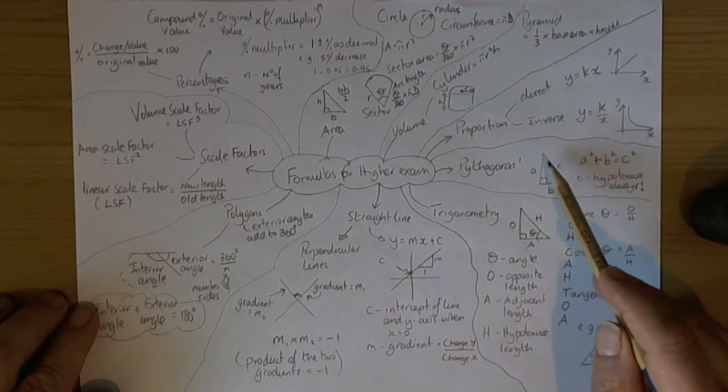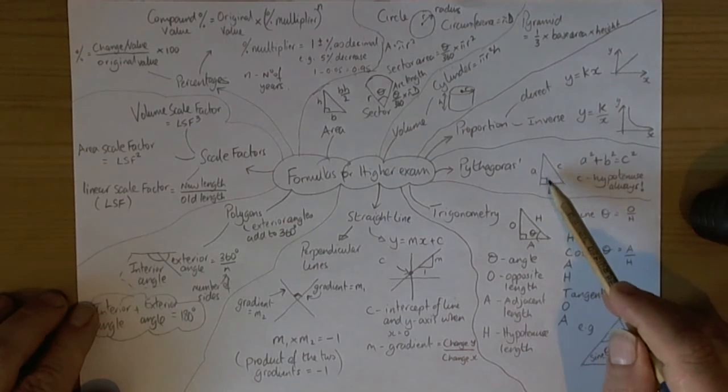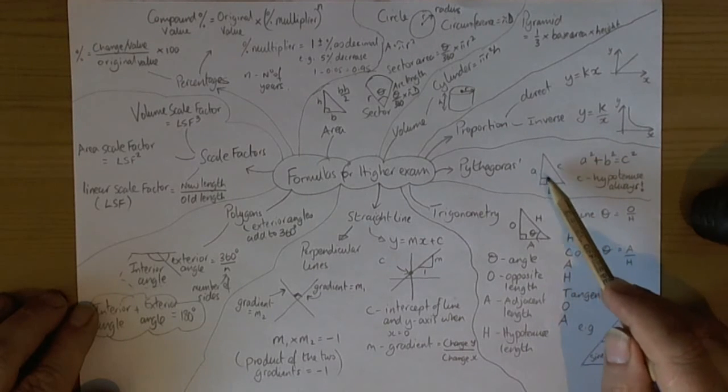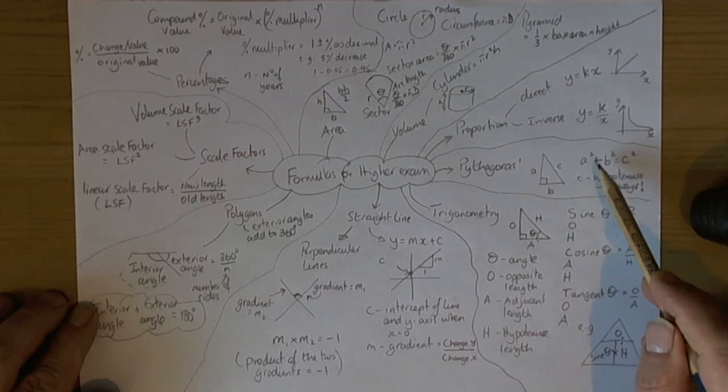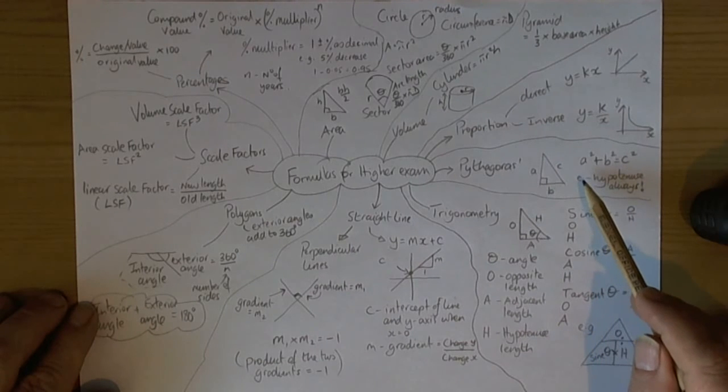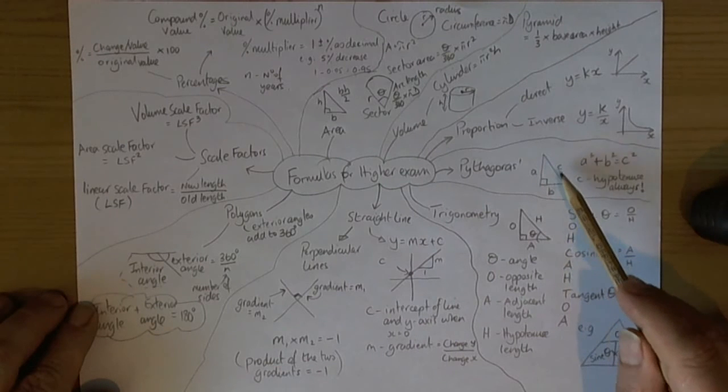If you see an exam question with a right angle triangle in it, then it's likely to be Pythagoras or trigonometry or similar triangles if there's two or more of those triangles. So you tend to look for the information, and if the question doesn't involve an angle then it's more than likely to be Pythagoras. And Pythagoras is reasonably okay: a squared plus b squared equals c squared. But you've always got to remember that the c position always has to be the hypotenuse, the opposite one to the angle, the longest side.